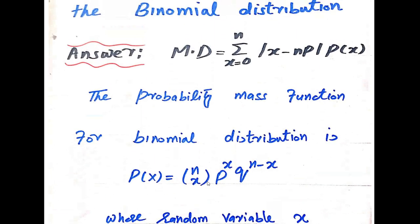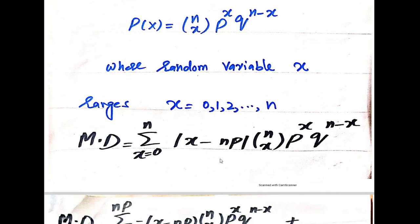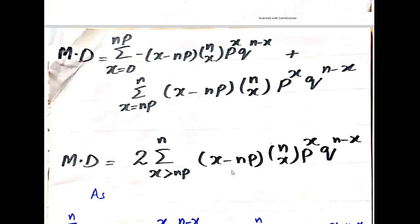Putting these values into the equation, mean deviation equals the sum from x=0 to n of |x minus np| · nCx · p^x · q^(n-x). Now we simplify this.